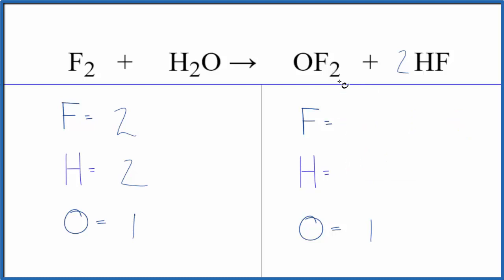So now we have two plus two times one, so we have four fluorine atoms. And hydrogen, two times one, two hydrogen. And we still just have the one oxygen. Things are looking a little bit easier now.